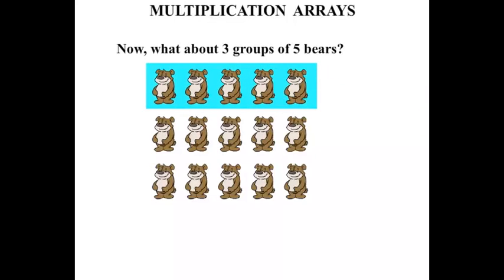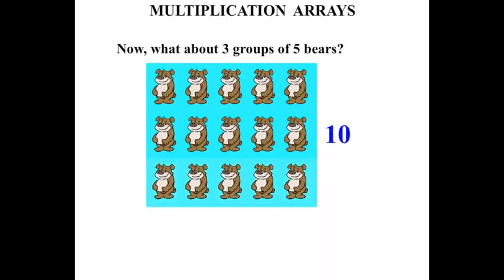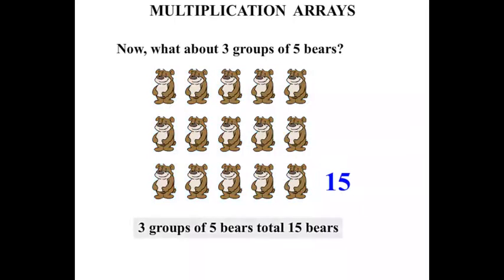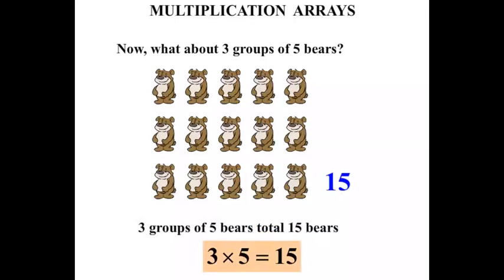Let's count them again, this time in fives. Five, ten, fifteen. So we can say that three groups of five bears total fifteen bears. And writing that in a number sentence: three groups of five is three times five. The total is fifteen, so we can write that it equals fifteen.